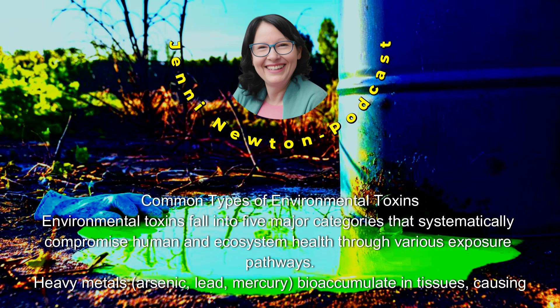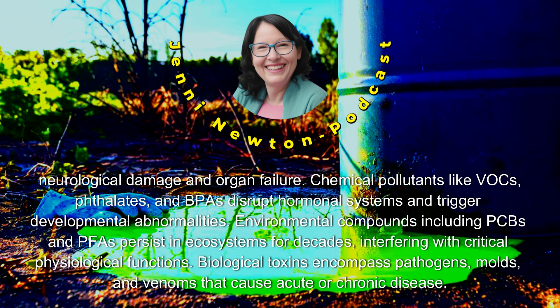Common Types of Environmental Toxins: Environmental toxins fall into five major categories that systematically compromise human and ecosystem health through various exposure pathways. Heavy metals — arsenic, lead, mercury — bioaccumulate in tissues, causing neurological damage and organ failure. Chemical pollutants like VOCs, phthalates, and BPAs disrupt hormonal systems and trigger developmental abnormalities. Environmental compounds including PCBs and PFAs persist in ecosystems for decades, interfering with critical physiological functions.